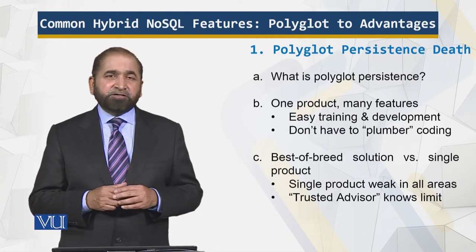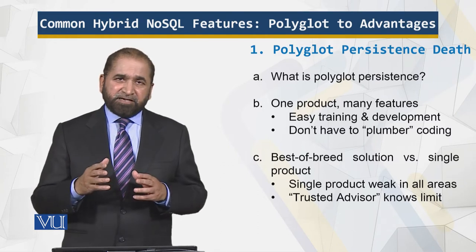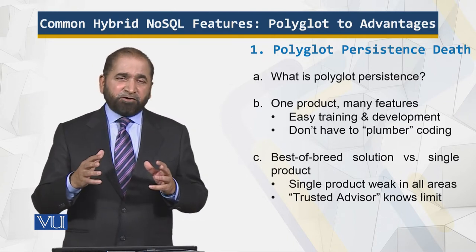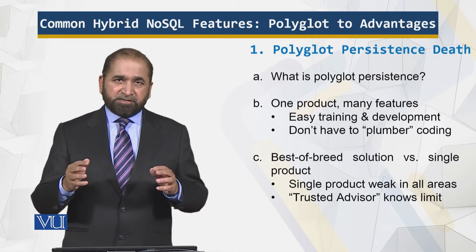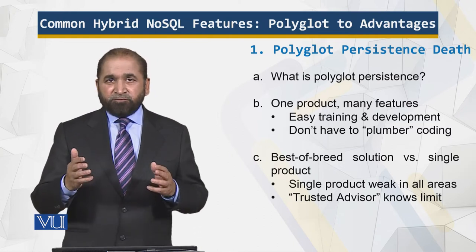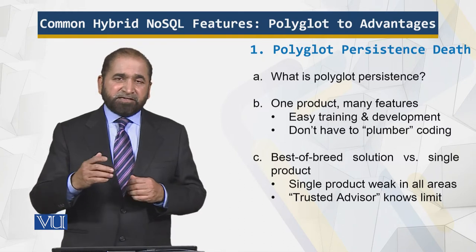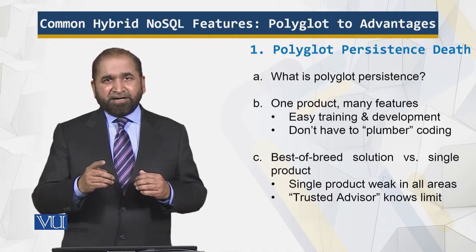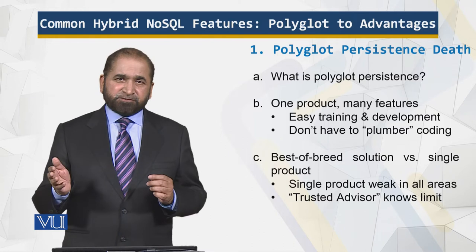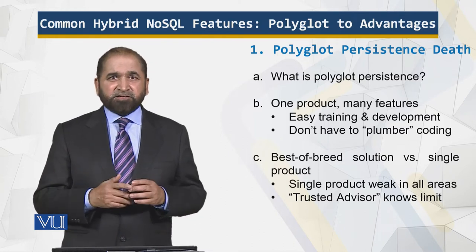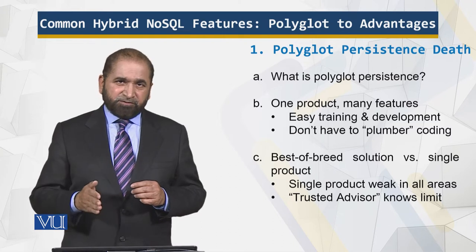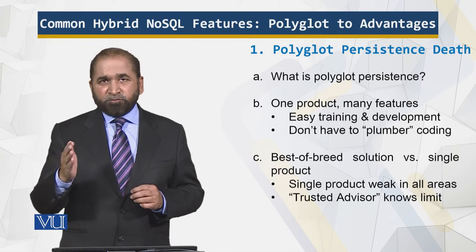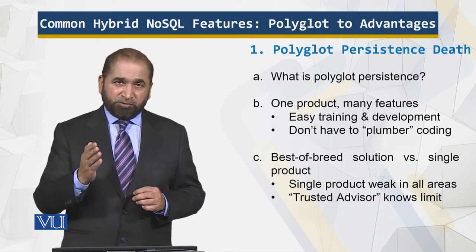The question is: best of breed, or a single solution? Best of breed means I have the best solution, but a single solution may not have high-quality answers across all the different domains I want to apply it to. There is a limit between when I need a single jack-of-all-trades solution versus multiple solutions. You as a trusted advisor know where that boundary is — where you shift from a single solution to multiple best-of-breed solutions.